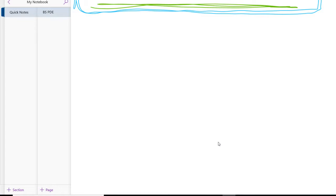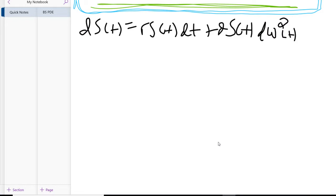For example, we know under Q that dS(t) is going to be equal to rS(t)dt + σS(t)dW_Q. So the question is, how do we solve this?